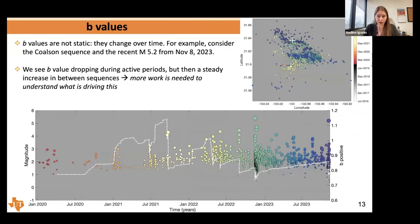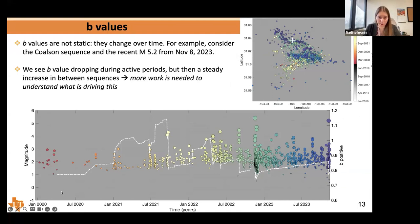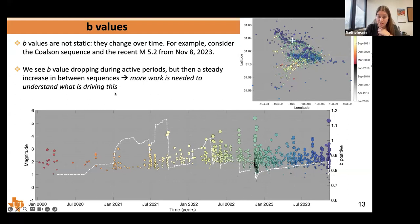One thing to note is that B-values are not static. When you look at some clusters in more depth, they change over time. For example, the most recent magnitude 5.2 earthquake was in the Coulson sequence in West Texas. If I plot all the earthquakes in that cluster up until November 2023, the white dashed line shows the B-value really changes quite a bit over the years — we have periods where the B-values drop, then recover, then drop and recover again. We have this sort of continual dropping with inter-sequence healing of some kind. More work needs to be done to understand what is driving this. We assume each cluster has its own individual B-value, but B-values are not static.